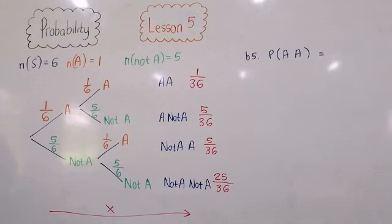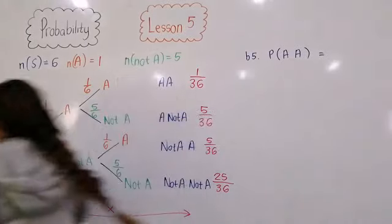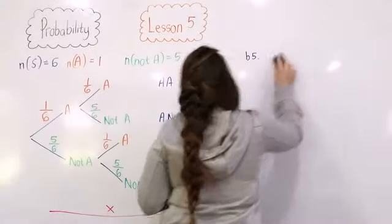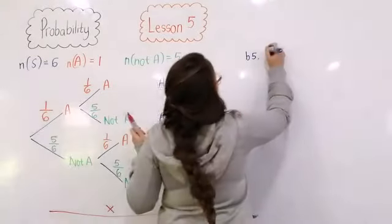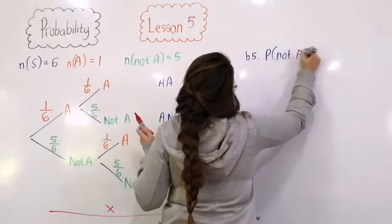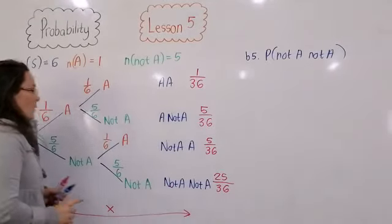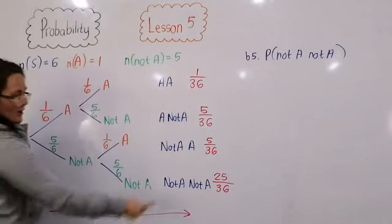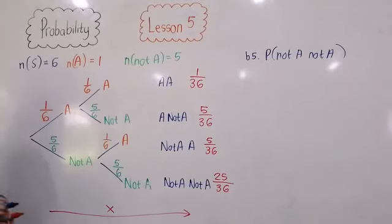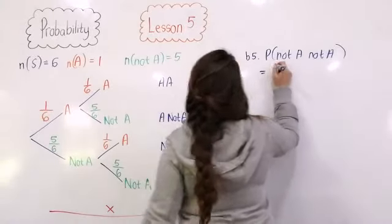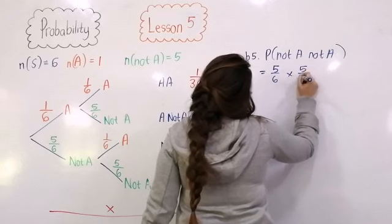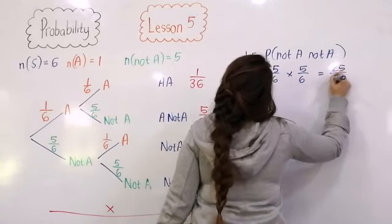B5 asks: what is the probability of not getting a four on the first roll and the second roll? It's the probability of not-A and not-A, because neither roll is a four. Out of my four options, I choose not-A followed by not-A, and multiplying across the branches: 5/6 × 5/6 = 25/36.